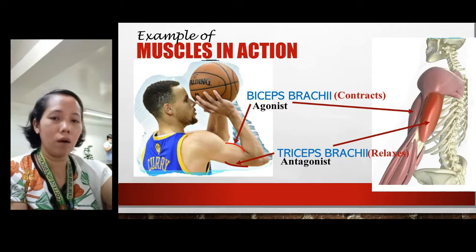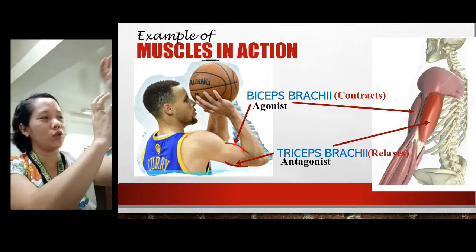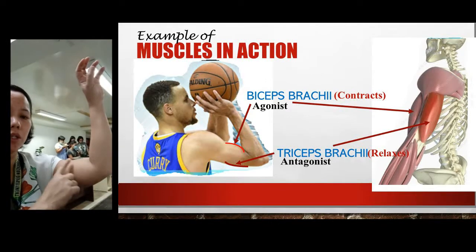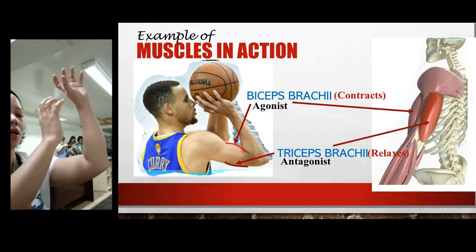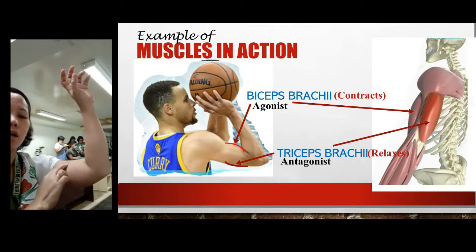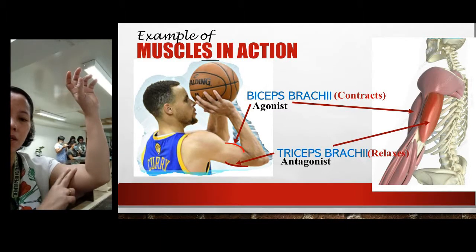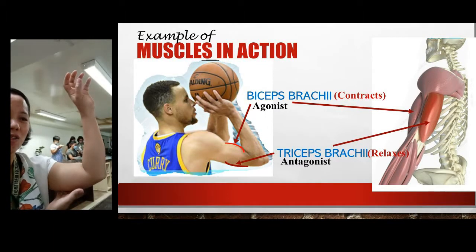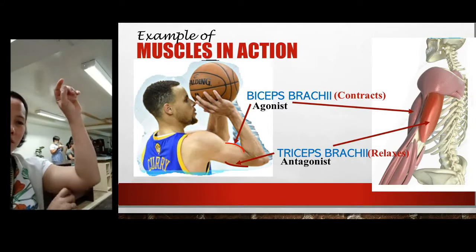So the triceps relaxes. You can try it now — imagine you are attempting to shoot a ball. If you touch this portion of your arm, it feels medyo contracted. Compare the feel of the muscle here compared to your back. If contracted, it feels firm here, but at the back it feels soft because you are not contracting it — it is relaxed. That is what you can see in the muscles of Stephen Curry.